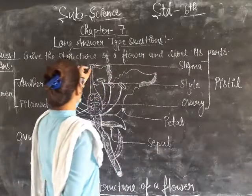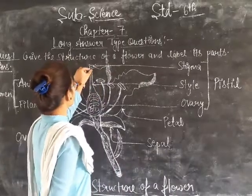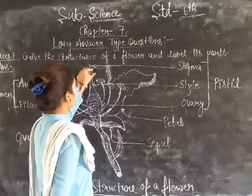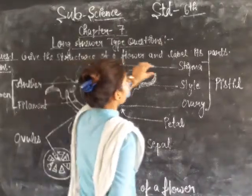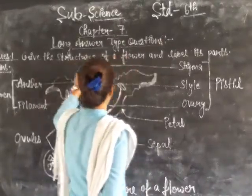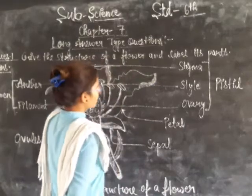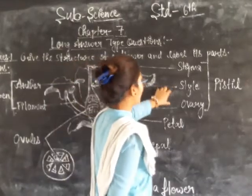Here you can see the tube-like structure. This is the stigma. This is the style.